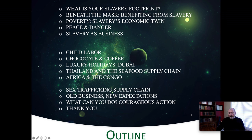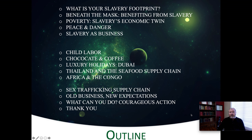Beneath the mask: benefiting from slavery. Virtually all of us benefit from slavery, even though we don't necessarily know it, we're not aware of it. Poverty is slavery's economic twin. We'll look at peace and danger. Slavery is a business, because it is a business. Child labor as a case study. We'll look at chocolate and coffee, luxury holidays in Dubai, Thailand and the seafood supply chain, Africa and the Congo, and sex trafficking supply chain. What old business looks like, what new expectations are, and what actions you can take if you would like to be part of the solution and not part of the problem.